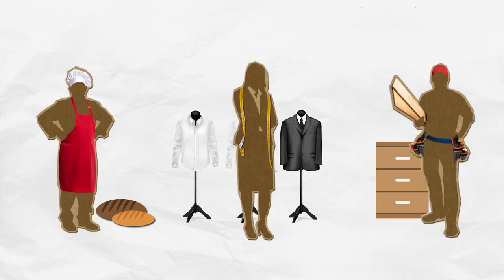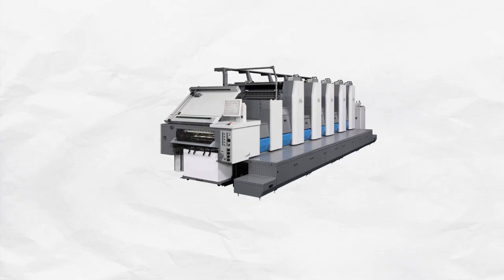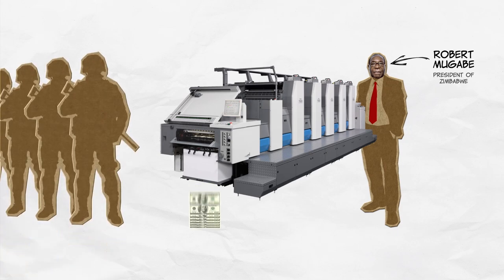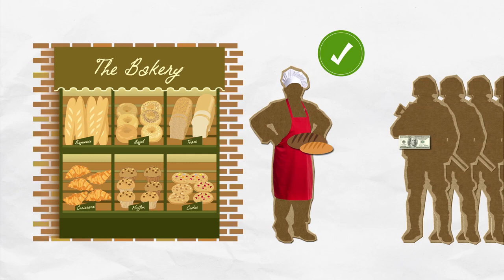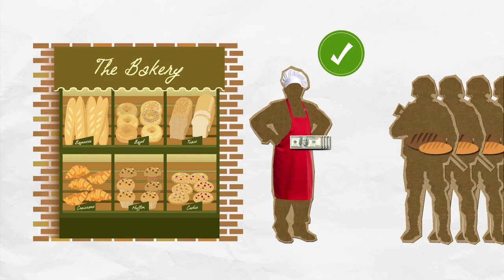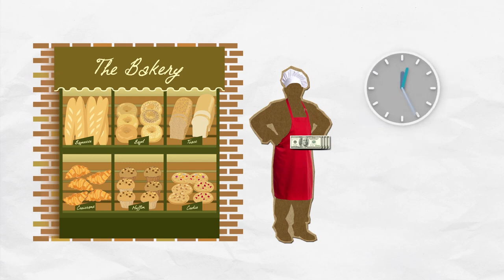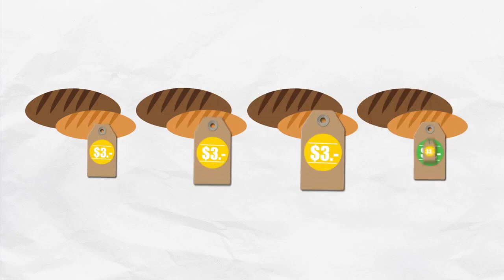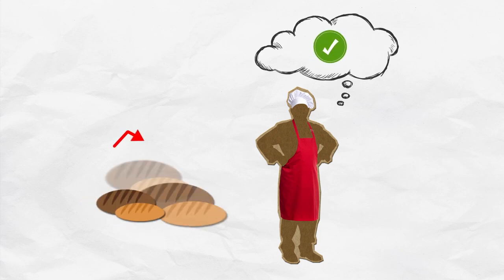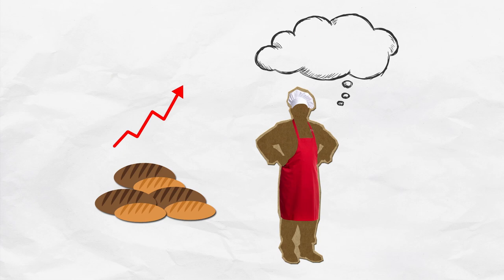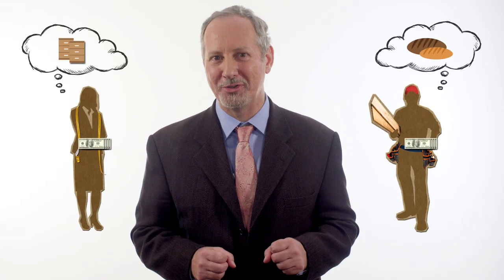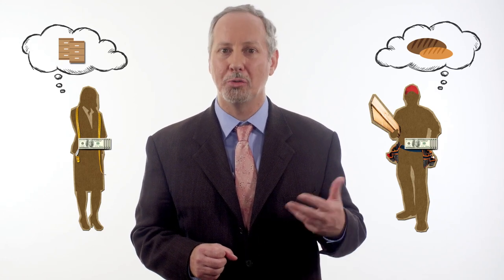Consider a small economy consisting of a baker, a tailor, and a carpenter, who buy and sell products among themselves. Now think about what happens when a government like that in Zimbabwe starts paying its soldiers with newly printed money. At first, the baker is delighted when the soldiers walk through his door with cash for bread. To satisfy his new customers, the baker works extra hours, hires more assistants, bakes more bread, and is able to raise prices. The baker thinks: with the increase in demand for bread, I'll be able to buy more clothes and more cabinets. Meanwhile, the tailor and the carpenter are thinking much the same thing, as the soldiers are also buying goods from them.